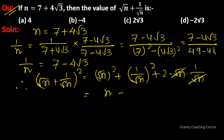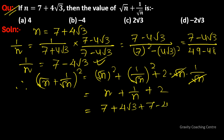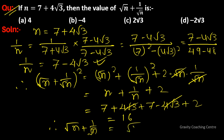The value of n is given as 7 plus 4 root 3, and 1 upon n is equal to 7 minus 4 root 3, plus 2. So the sum is 7 plus 4 root 3 plus 7 minus 4 root 3 plus 2, which equals 14 plus 2 equals 16. Therefore, root n plus 1 upon root n is equal to root 16.